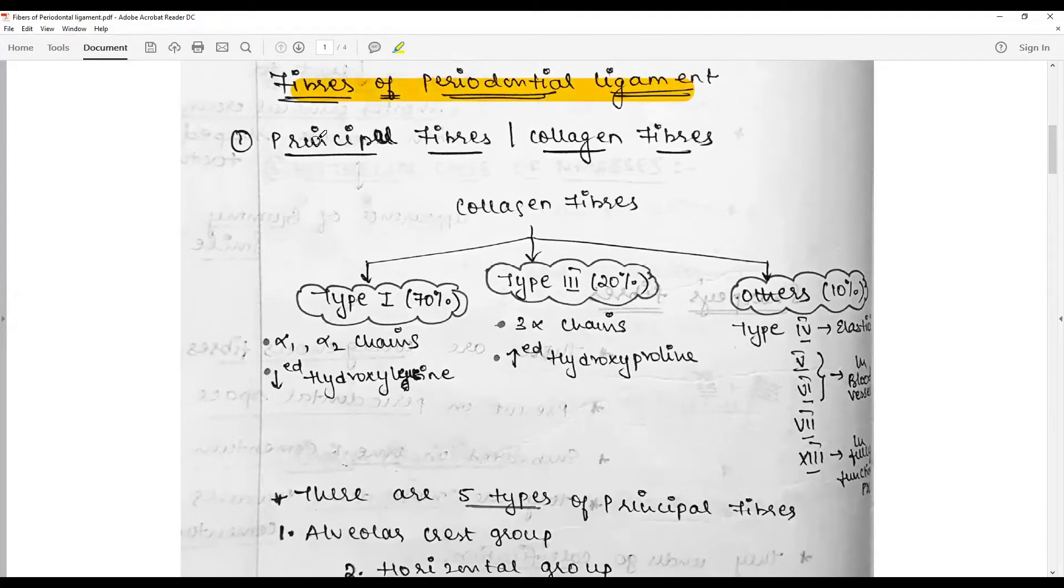The candidate has written that principal fibers or collagen fibers are of three types: Type 1, Type 3, and others. Type 1 has alpha 1 and alpha 2 chains with decreased hydroxyproline. Type 3 comprises 20 percentage with 3 alpha chains and increased hydroxyproline.